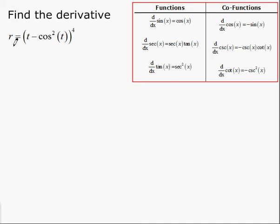In this example, we're asked to differentiate r equals t minus cosine squared of t all to the power of 4.